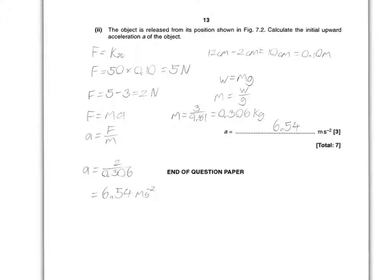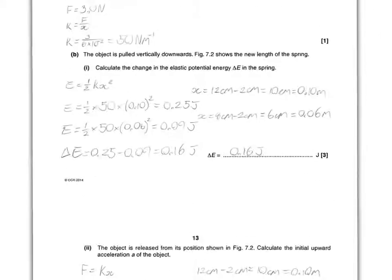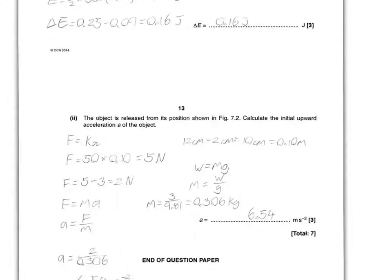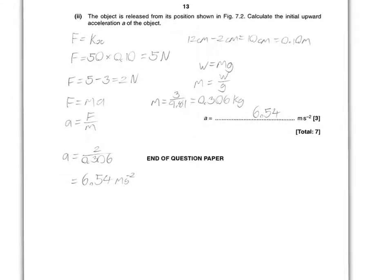F equals MA. You'll find the acceleration upwards, which is there. F here stands for net force. To find net force is 5 minus 3, to get the net force, because it is the force minus the weight. So, as a result, you use 2 divided by 0.306, and that will equal 6.54.